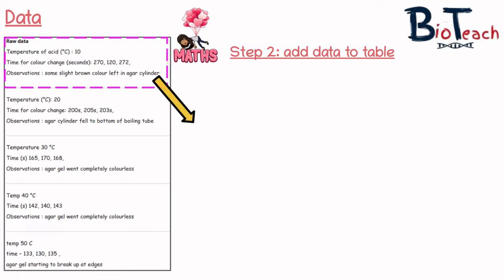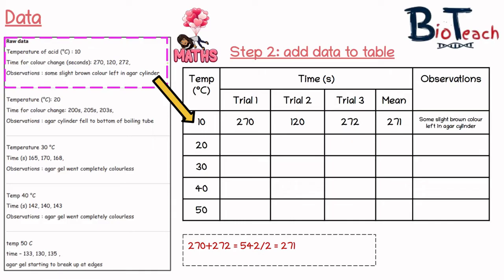Now let's add data to the table. For 10 degrees you've got 270 seconds, 120 seconds, and 272 seconds. When filling out this data, you need to identify anomalous results. Trial one is 270, trial three is 272 — but trial two at 120 seconds doesn't follow the other two trials at all. I would circle and highlight it, and definitely exclude it from the calculation of the mean. So I add 270 to 272, divide by two, and get a mean of 271 seconds — rounded to the nearest second.